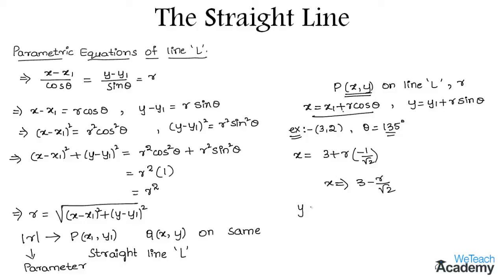Similarly, y = 2 + r · sin 135° = 2 + r · (1/√2), which gives y = 2 + r/√2. So these are the parametric equations of the given straight line.